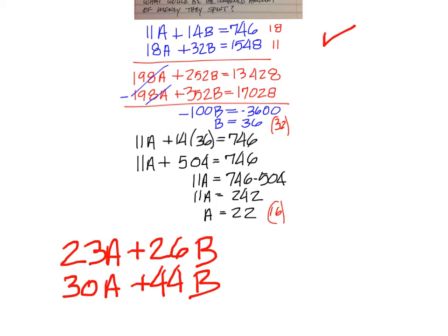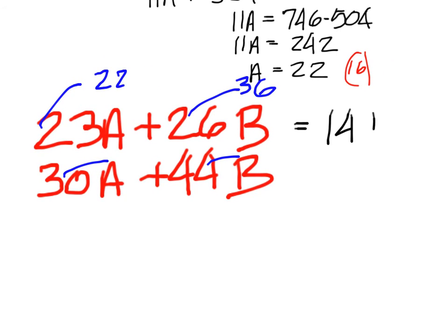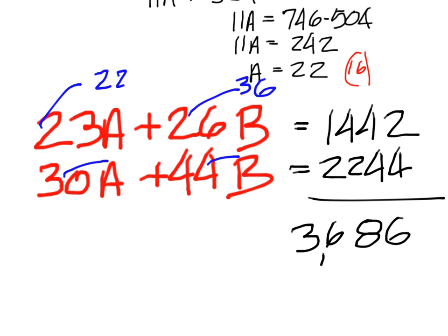So we know the prices for each: 22 and 36. That's what we're popping in here. So on the first row, you would have 23 times 22 and then plus 26 times 36. That would give you 1442. And then on the bottom one, 30 times 22 and then plus 44 times 36. Add those both together: 14.42 plus 22.44 would be 36.86 combined total.